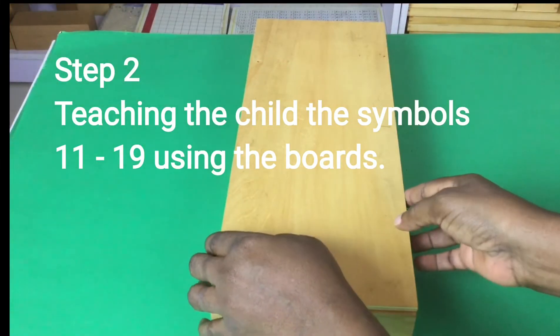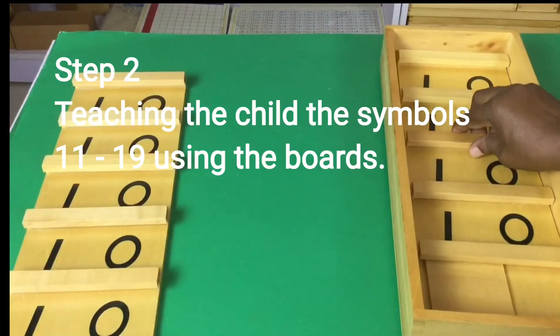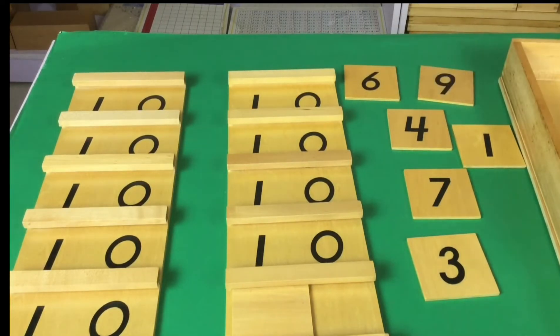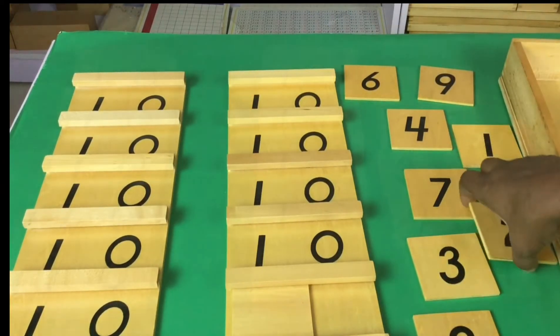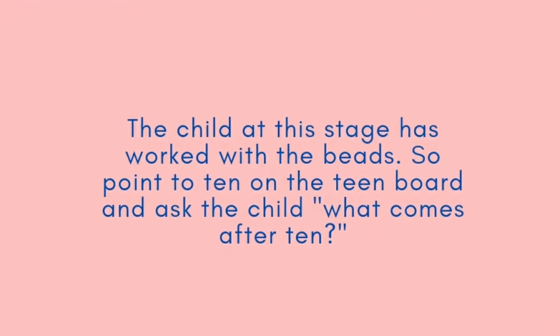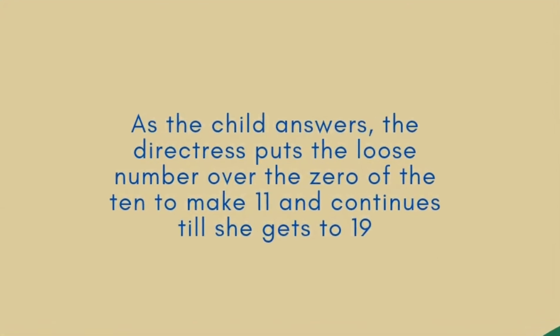Step two: teaching the child the symbols 11 to 19 using the boards. The child at this stage has worked with the beads, so point to 10 on the teen board and ask the child what comes after 10. As the child answers, the directress puts the loose number over the zero of the 10 to make 11, and continues till she gets to 19.